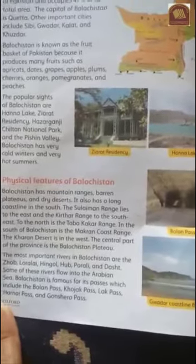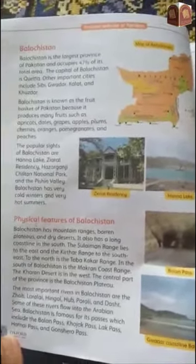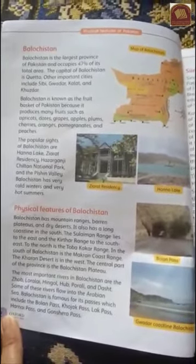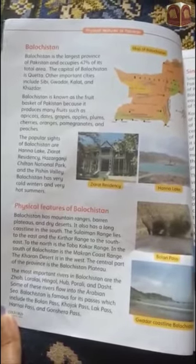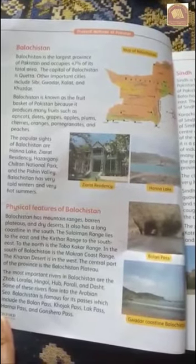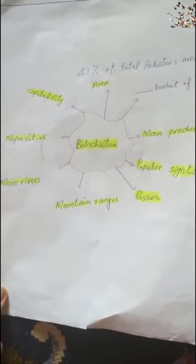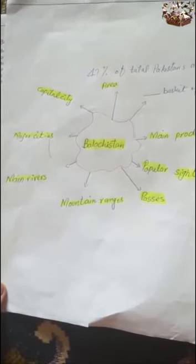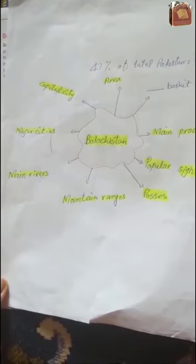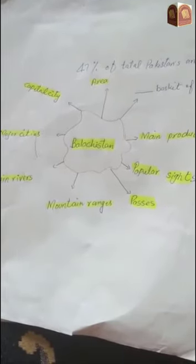I hope you have understood. For today's homework, have your notebooks ready. Take the left side of the page, draw a margin line, and write the date. Then read page number two at least three times. Also make a fact sheet about Balochistan including the capital city, rivers, mountains, ranges, and passes.